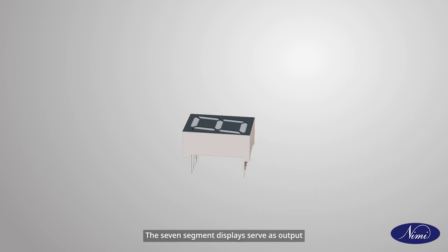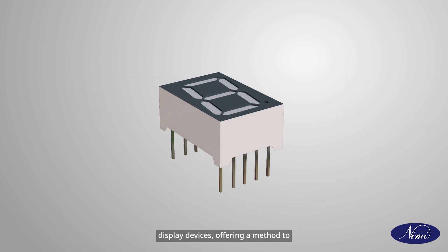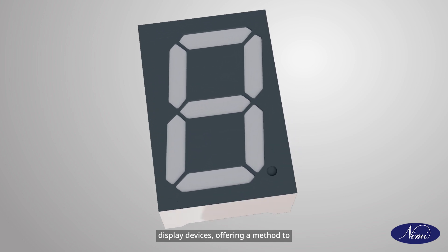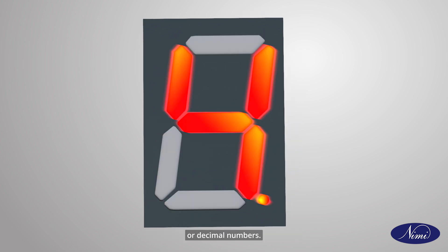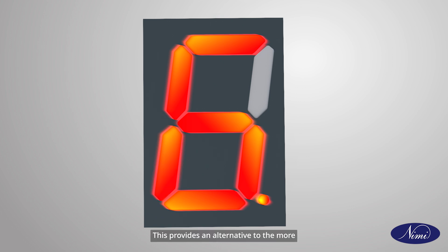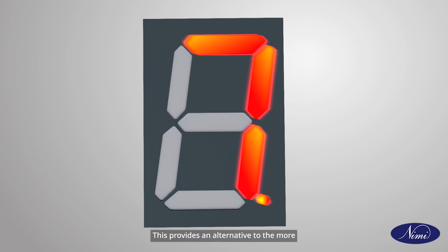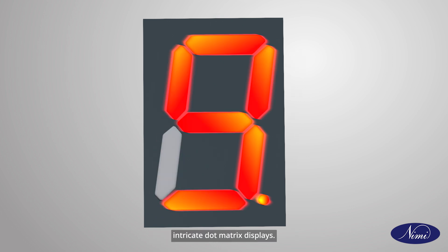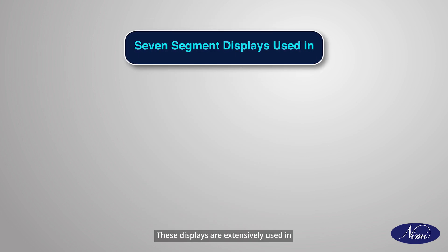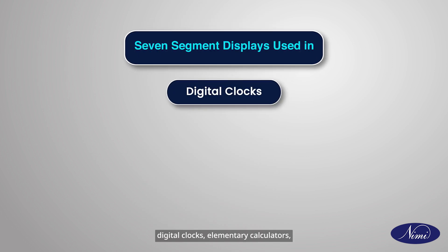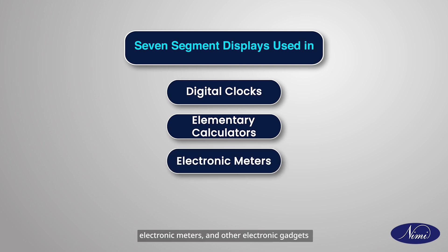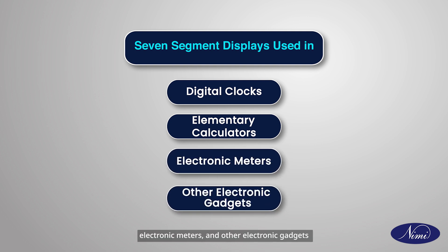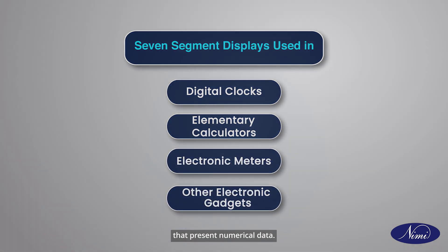A light emitting diode converts electrical energy into light energy upon the application of voltage. The seven segment displays serve as output display devices, offering a method to exhibit information through images, text, or decimal numbers. This provides an alternative to the more intricate dot matrix displays. These displays are extensively used in digital clocks, elementary calculators, electronic meters, and other electronic gadgets that present numerical data.